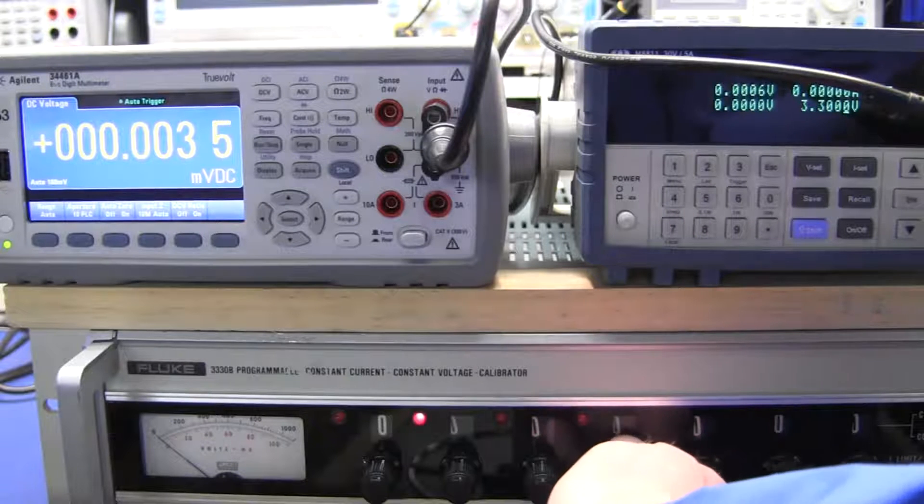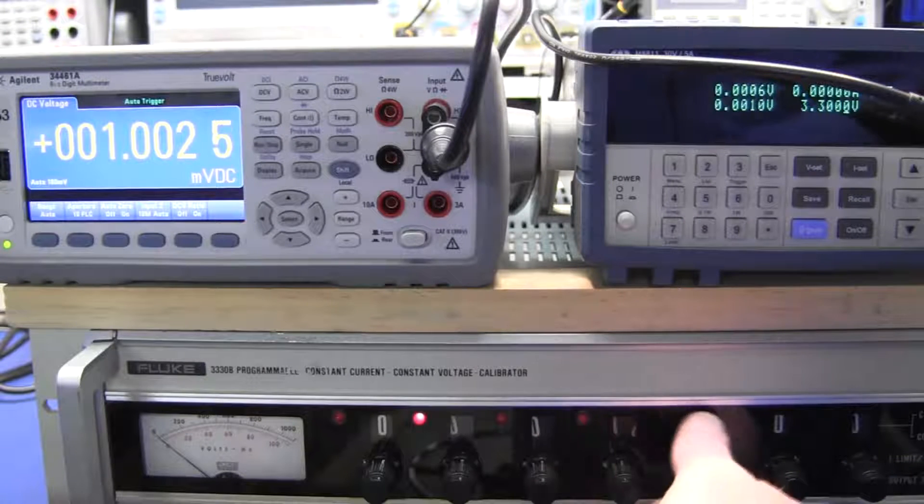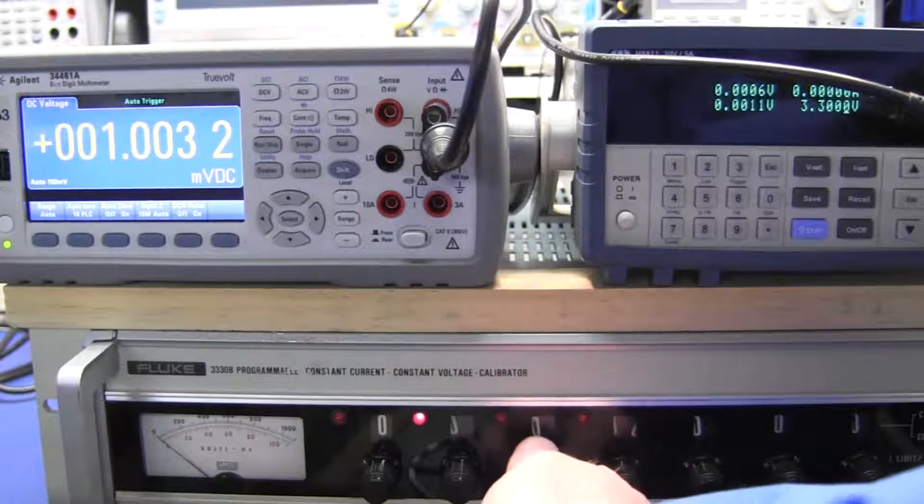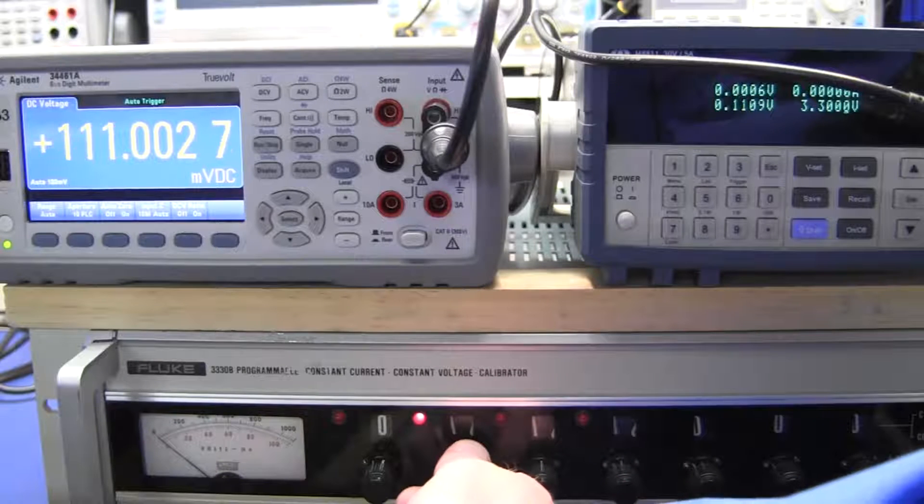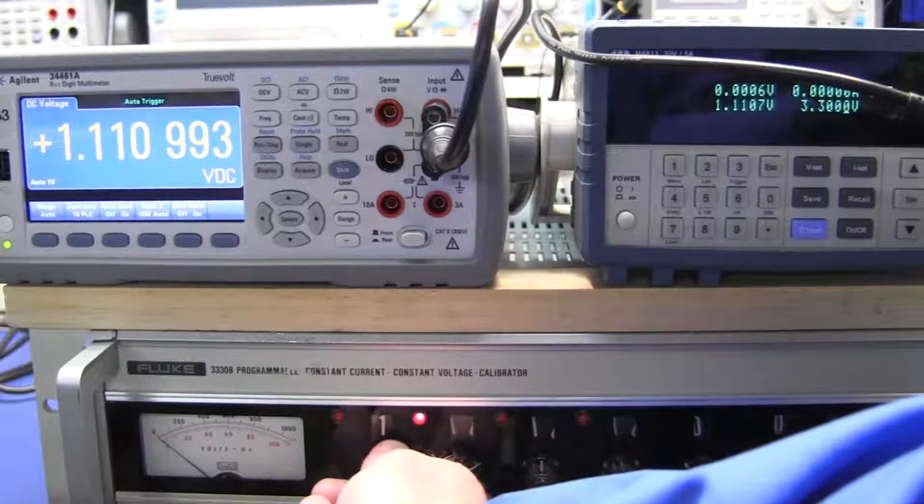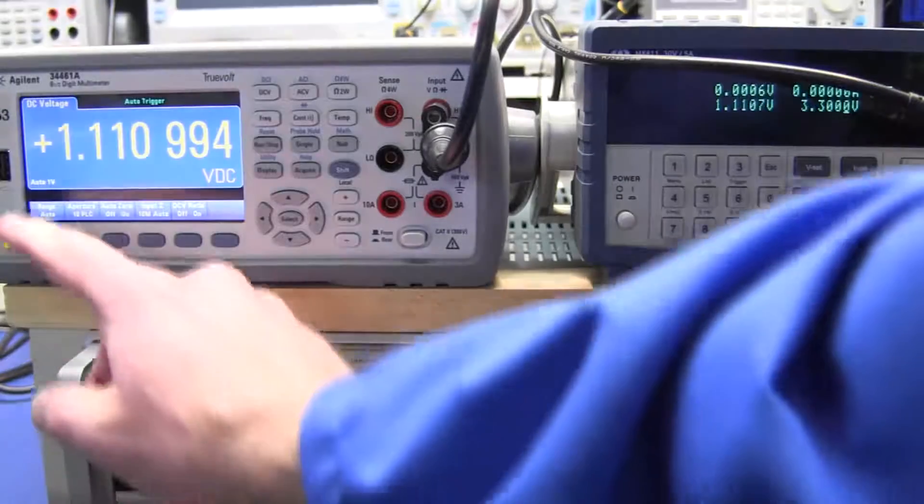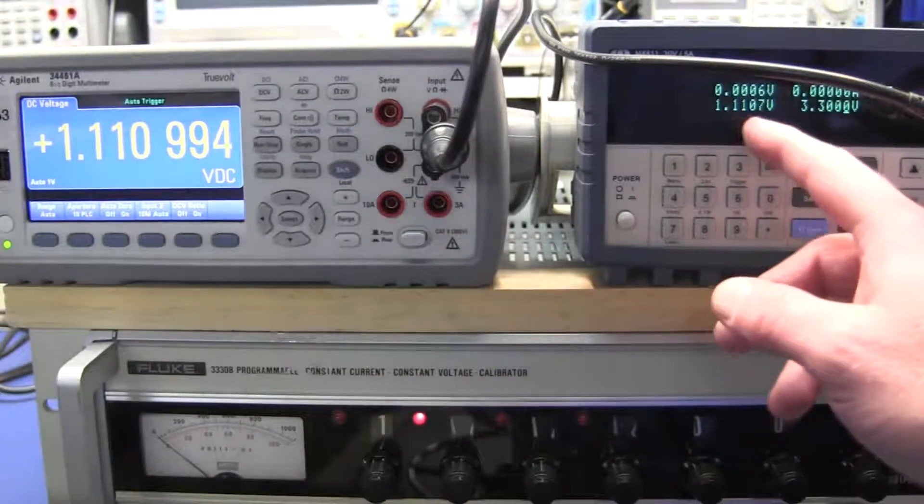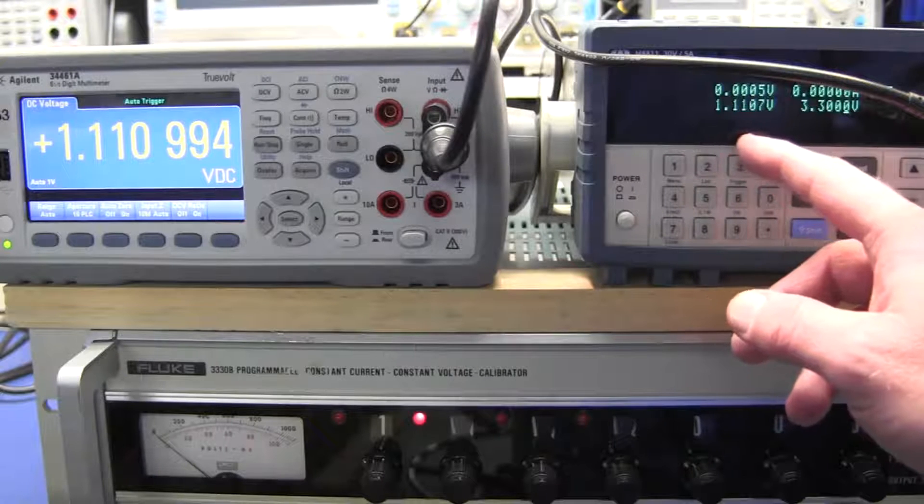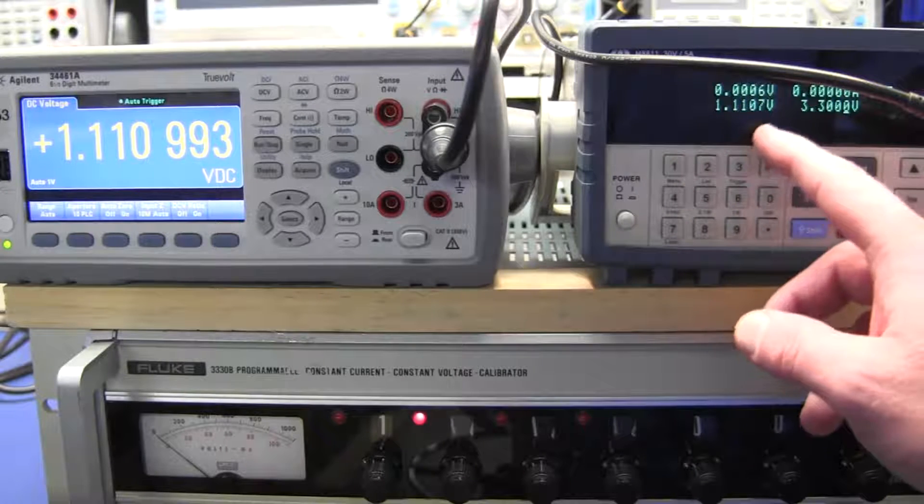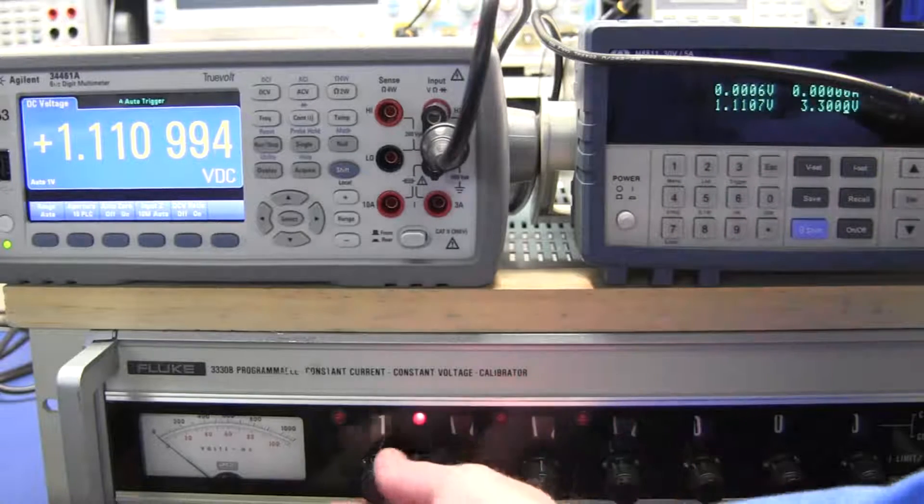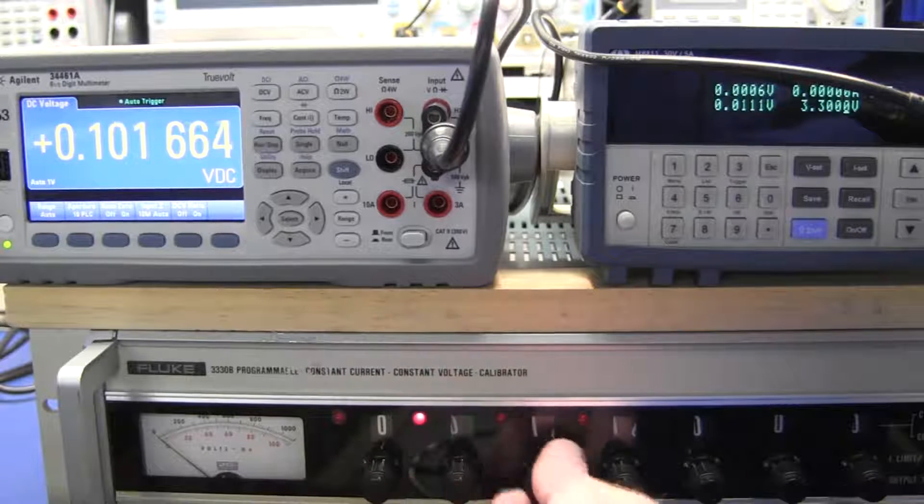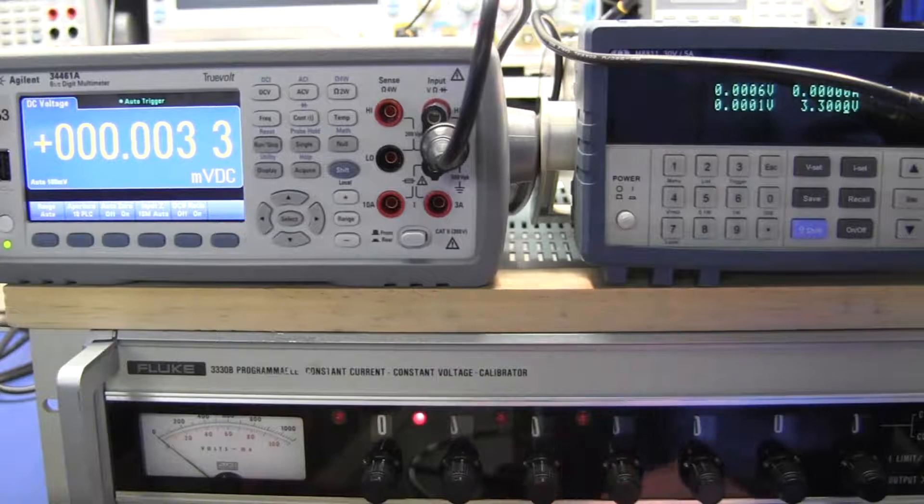Let's now test it at the 100, actually, 1 millivolt, 10 millivolt, 100 millivolt, 1 volt. Agilent is reading 1.1109994, or 994. 1.01107. So we're just a little bit low on the Mainuo, but not too bad. Let's change voltage ranges.